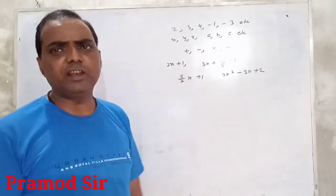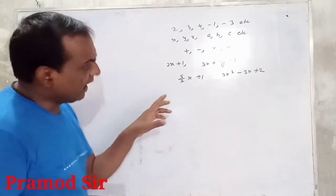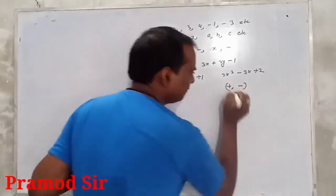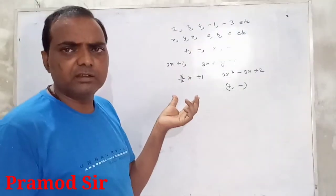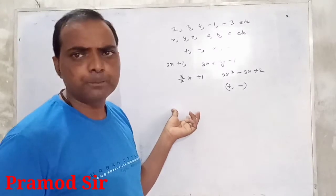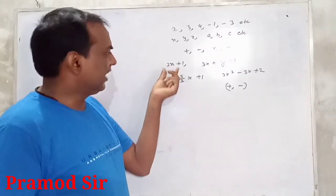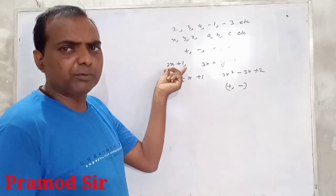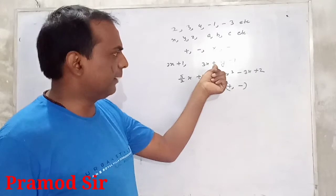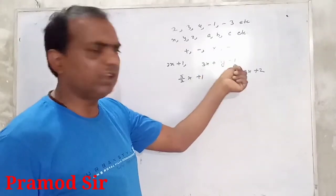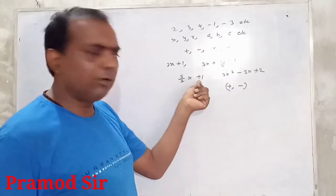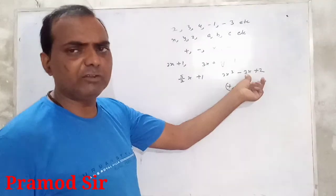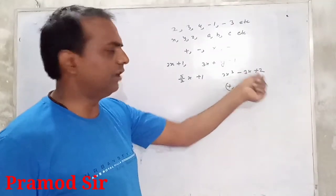Ab yahan jo algebraic expressions hain, yahan mathematics ke operations — plus ya minus ke dwara — algebraic expression ka jo separation hai, that is called terms of the algebraic expression. For example, in 2x + 1, a plus symbol is used, so two terms are formed. Using positive and negative symbols, 1, 2, and 3 terms can be made.